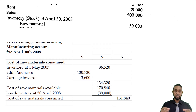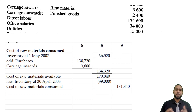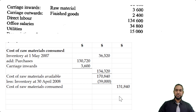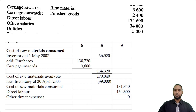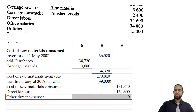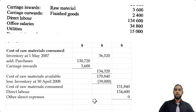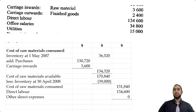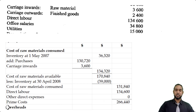This is the prime cost section. That $131,840 is our direct materials. We also need direct labor and any other direct expenses. Direct labor is explicitly stated as $134,600. There are no other direct expenses listed. Adding direct materials and direct labor together gives us a total prime cost of $266,440.